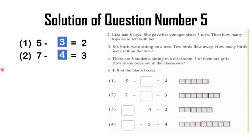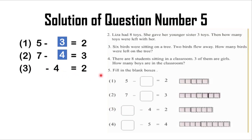Now question 3: blank minus 4 equals 2. The question is: if we subtract 4 from a number and the answer is 2, find that number. If we add 4 with 2, the answer will be 6 — that is, 4 plus 2 equals 6. So in the blank box you should write 6. Therefore 6 minus 4 equals 2, and that is the solution of question number 3.